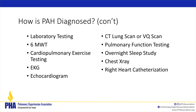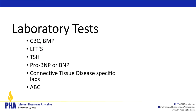Then we order testing. We order laboratory tests, a six-minute walk test — sometimes listed as 6MWT — an EKG, echocardiogram, CT lung scan, VQ scan which is the gold standard for PAH, pulmonary function testing, overnight sleep study, chest X-ray, and right heart catheterization.